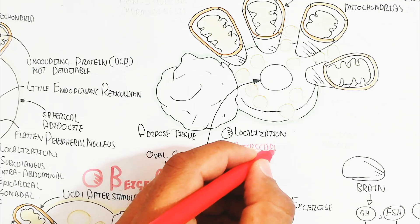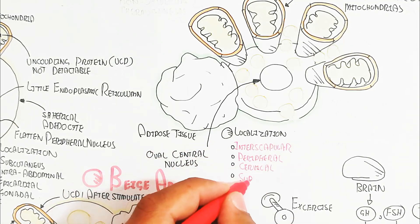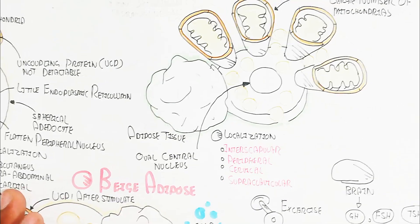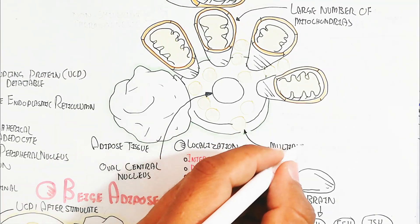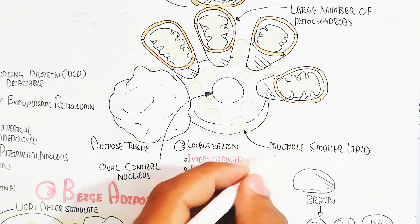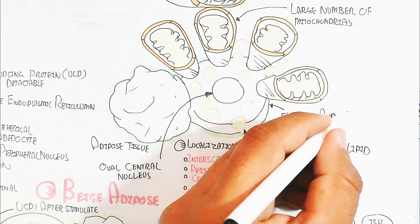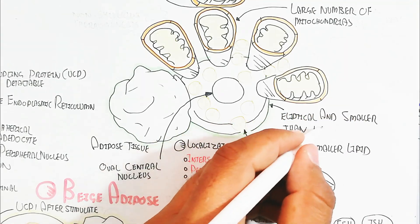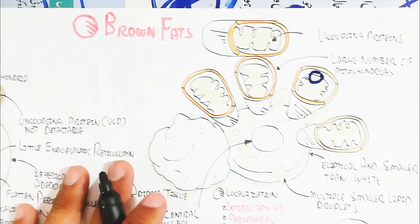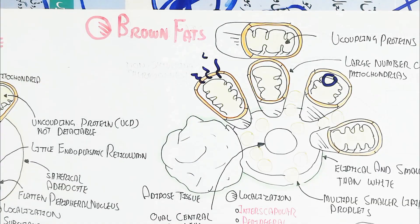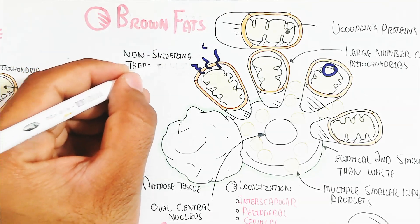And the localization is interscapular, peripheral, cervical, supraclavicular. And multiple smaller lipid droplets are present rather than the bigger droplets like white adipose tissue. And this basically is elliptical and smaller than white adipose tissue cells. And this is elliptical not rounded.